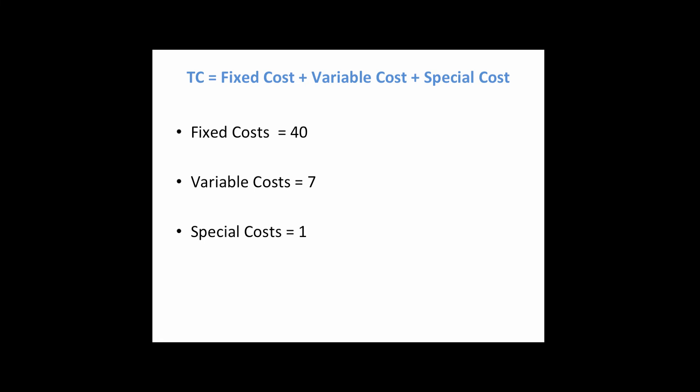Therefore, the variable cost of 7 will be known as 7 times X, or 7X. Special costs are a little unique — they rarely occur. Special costs, if you recall, was a figure of 1. These figures were given to you in the question. We will now complete the total cost function as: 40 (your fixed cost), plus 7X (your variable cost), plus X squared (your special costs). Now we're ready to put those together into your total profit equation.